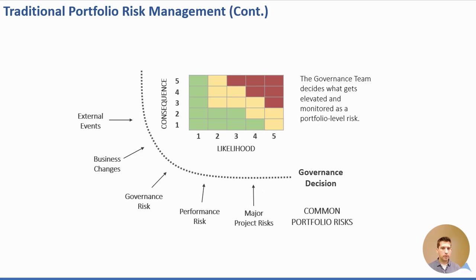Looking a little more inward, we could have a governance risk, which relates to the performance or quality of our portfolio governance team. This needs to be monitored. Are we approving everything? Are we making everything a high priority? Unfortunately, that's a common occurrence, but it compromises the ability to successfully execute the portfolio and deliver the corresponding strategies. So we need to monitor even the quality and performance of the governance.